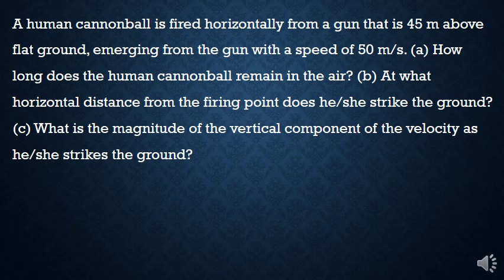Now we're going to have you work through a problem thinking about a human cannonball that's fired horizontally from a gun that's 45 meters above flat ground. It leaves the gun with a speed of 50 meters per second. We want to figure out how long the human cannonball remains in the air. At what horizontal distance from the firing point he or she strikes the ground. And the magnitude of the vertical component of the velocity as he or she strikes the ground.